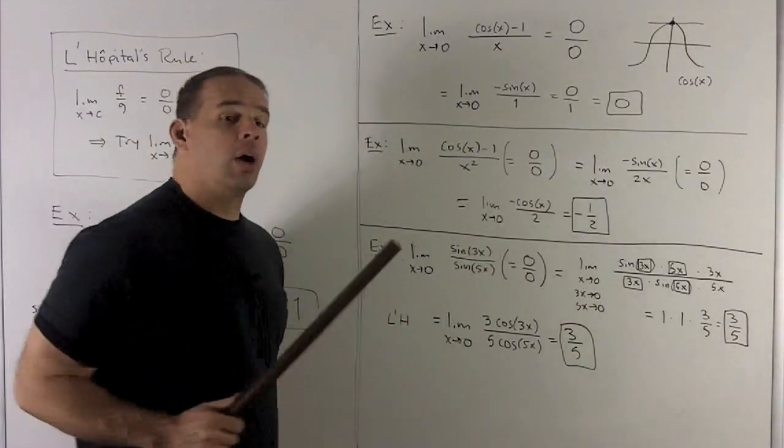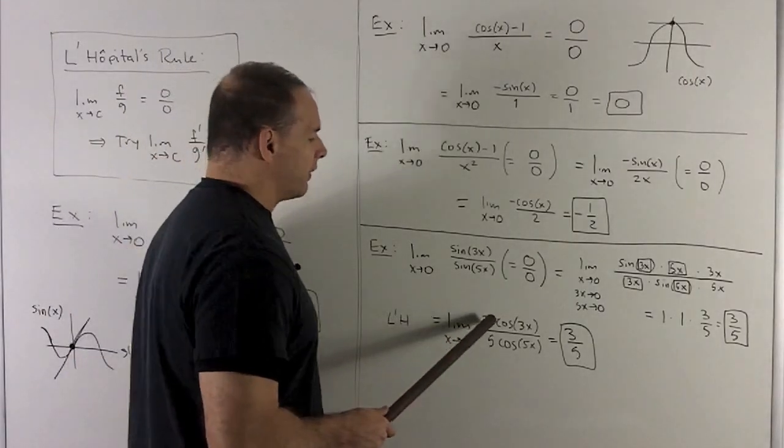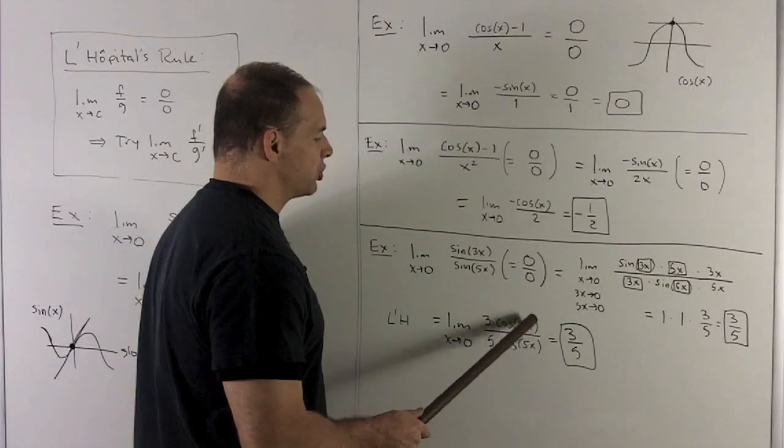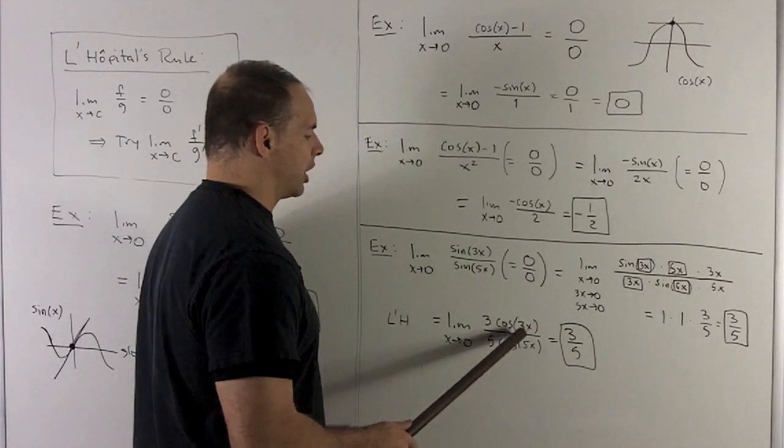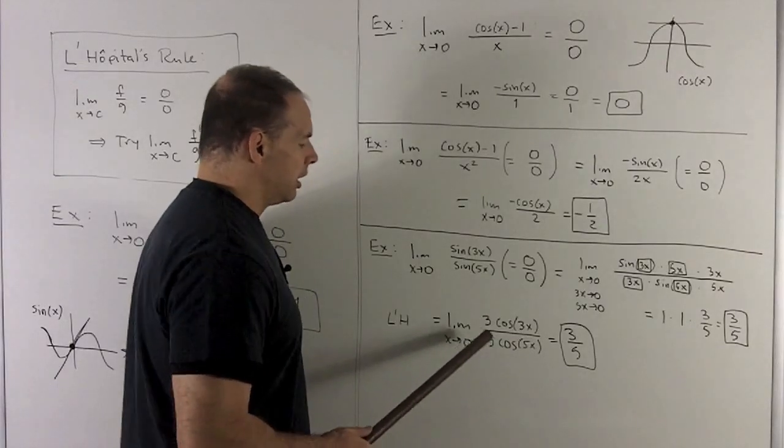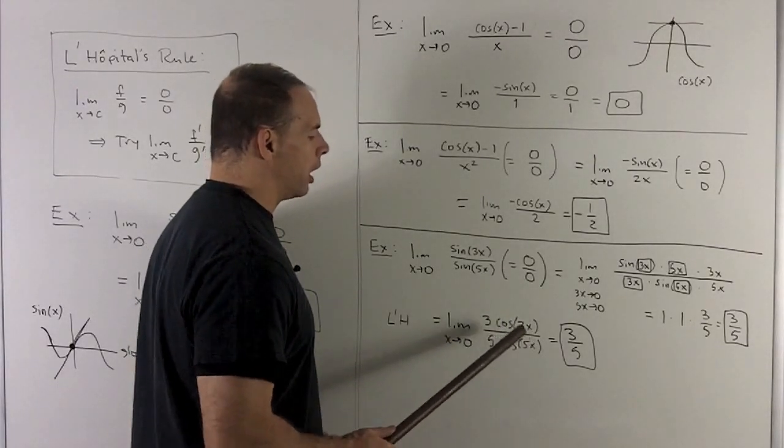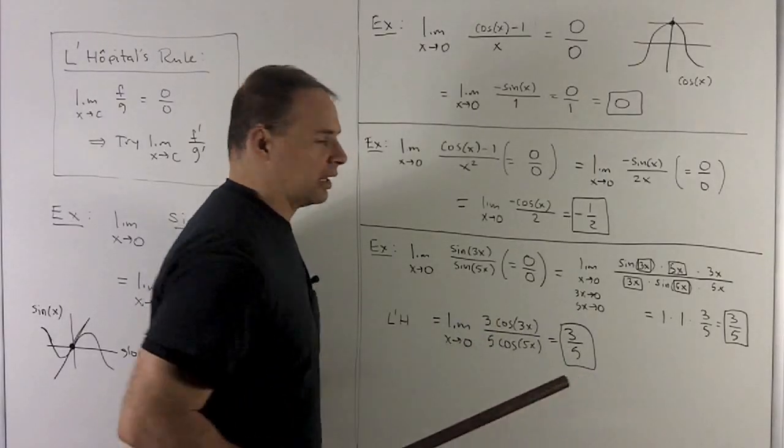Since I have the 0 over 0, we can also go to L'Hopital's rule. I take the derivatives. Derivative of sine of 3x is cosine 3x. Chain rule says put a 3 in front. Derivative of sine of 5x is just cosine 5x. Chain rule says put a 5 in front. And so when I put the 0 in, we have cosine 0, cosine 0 are both 1. And I'm left with the 3 fifths, which agrees with the way I did it traditionally.